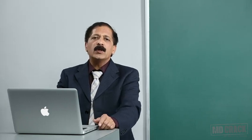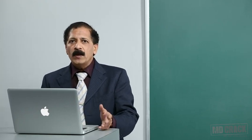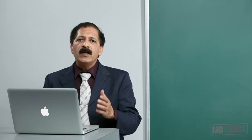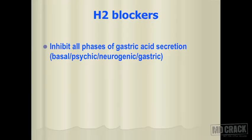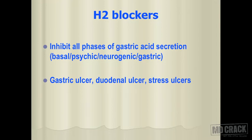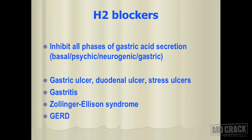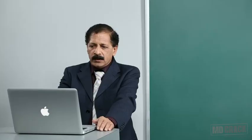Moving to H2 blockers — just a brief introduction. H2 blockers are mostly associated with gastric acid secretion and inhibit all phases: basal, psychic, neurogenic and gastric phases. Since they inhibit all phases, they are useful in decreasing gastric acid secretion and are used symptomatically in management of gastric ulcer, duodenal ulcer, stress ulcers, gastritis, Zollinger-Ellison syndrome and gastroesophageal reflux disease.